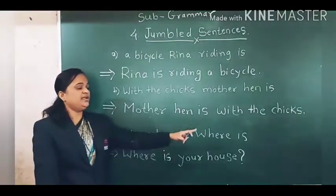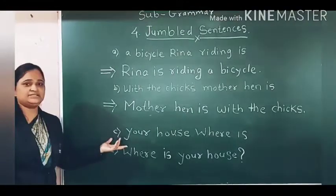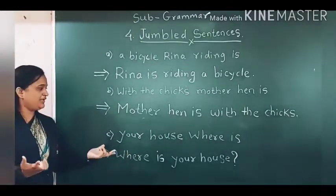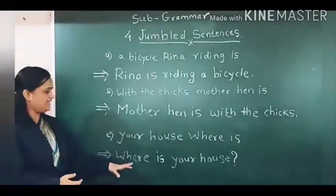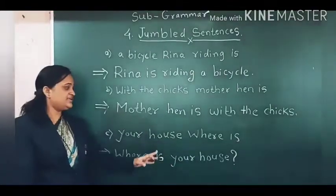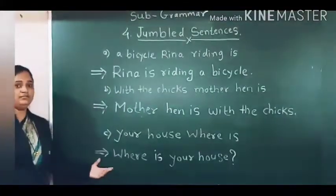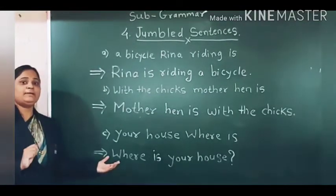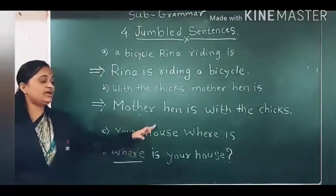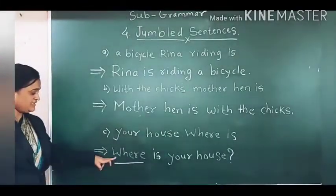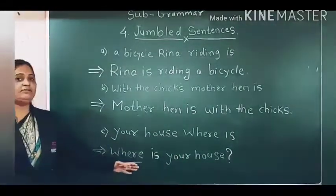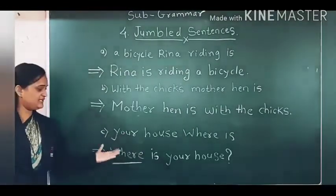Next example: 'Your house where is.' There is no meaning in this sentence. We can make this a proper sentence: 'Where is your house?' This is a question, so 'where' is a question word. The first word is capital and we put a question mark at the end. This sentence now has proper meaning.